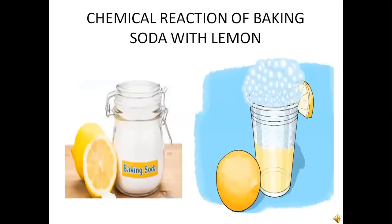Chemical reaction of baking soda with lemon: baking soda is sodium hydrogen carbonate, and lemon juice contains citric acid. When these two substances are mixed, a chemical change takes place, forming three new substances. The word equation is: sodium hydrogen carbonate + citric acid → sodium citrate + carbon dioxide + water. This reaction of baking soda with lemon is an example of a chemical change.